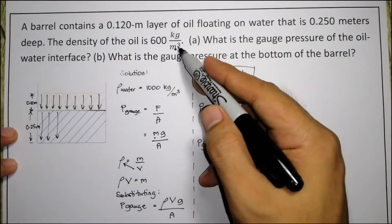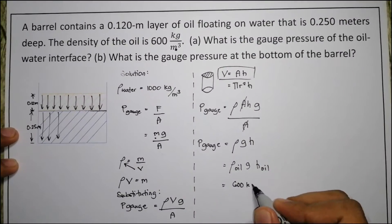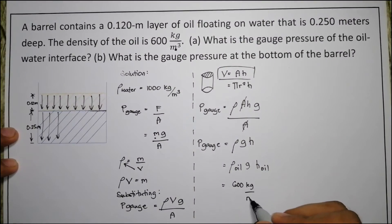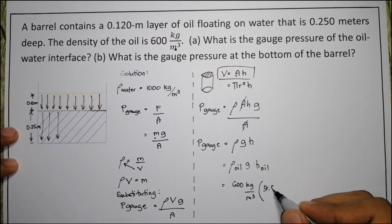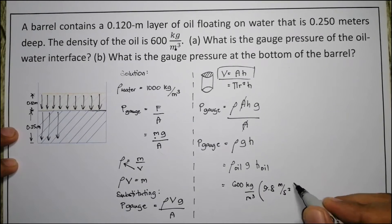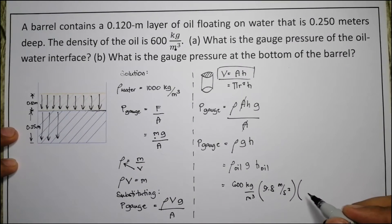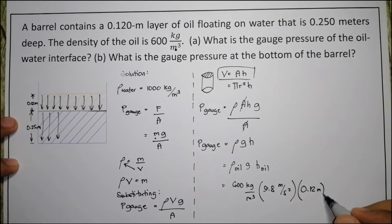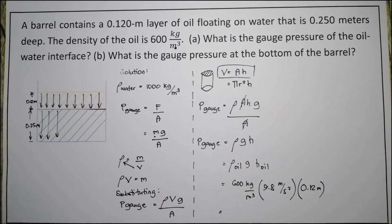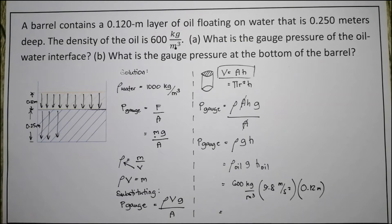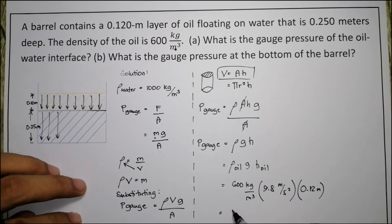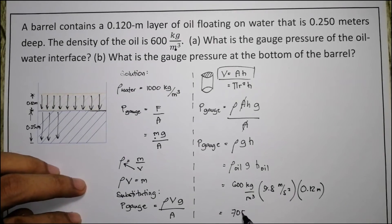To solve: 600 kg/m³ (density of oil) times 9.8 m/s² (gravity) times 0.12 meters (height of oil). That gives us 600 times 9.8 times 0.12, which equals 705.6.